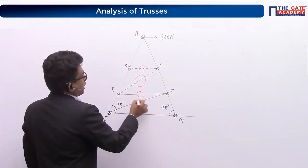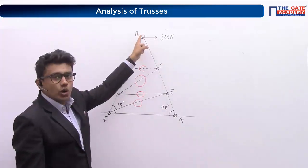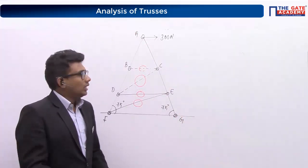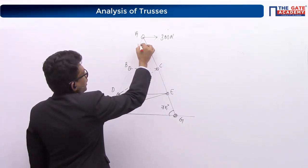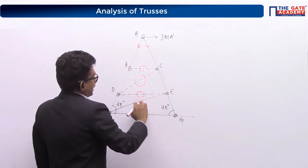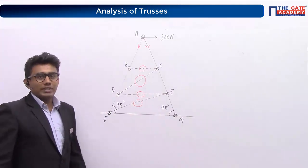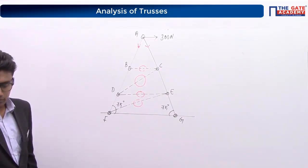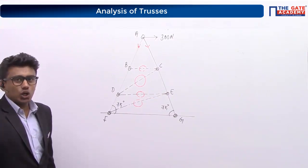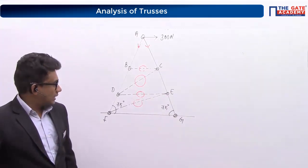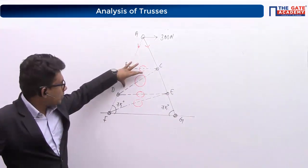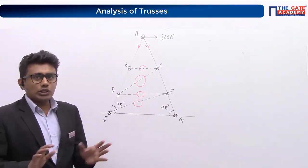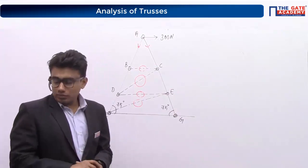The entire load at joint A is transferred to the supports through the two inclined end members. All intermediate members are zero force members. The total number of zero force members in this truss is four: CB, CD, DE, and EF are all zero force members.